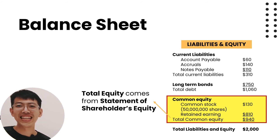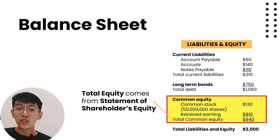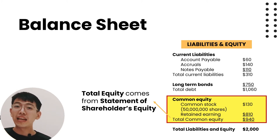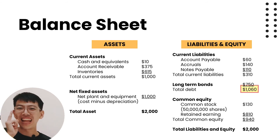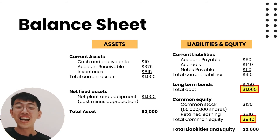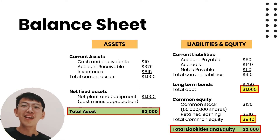In this example, total equity is common stock of 130 dollars plus retained earnings of 810 dollars, equaling 940 dollars. Total liabilities and equity is 1,060 dollars plus 940 dollars, equaling two thousand dollars — which equals total assets. So total assets equals total liabilities and equity, both at two thousand dollars.